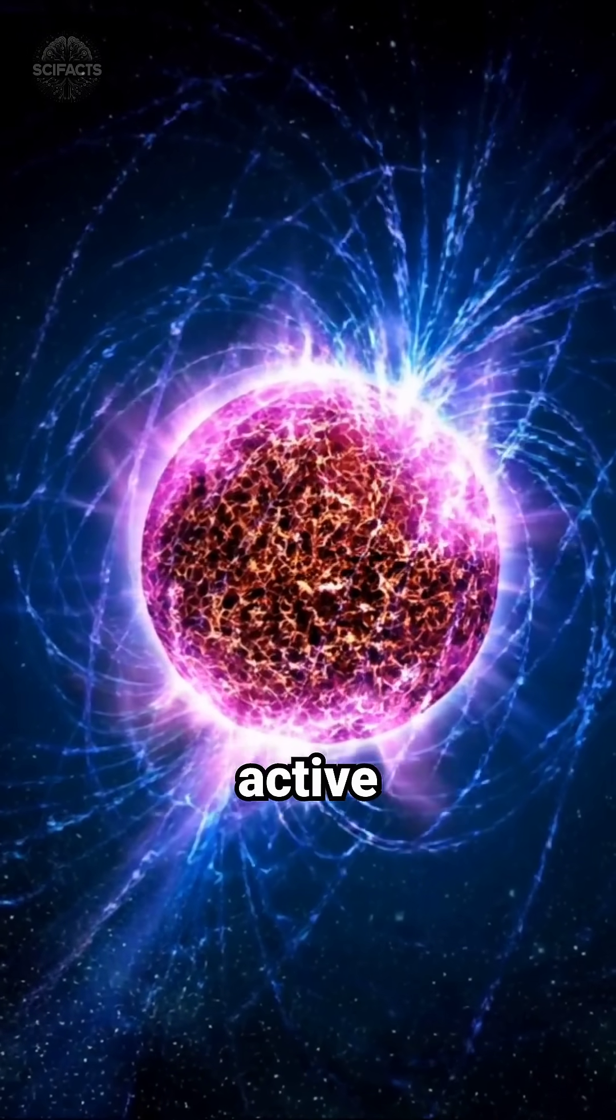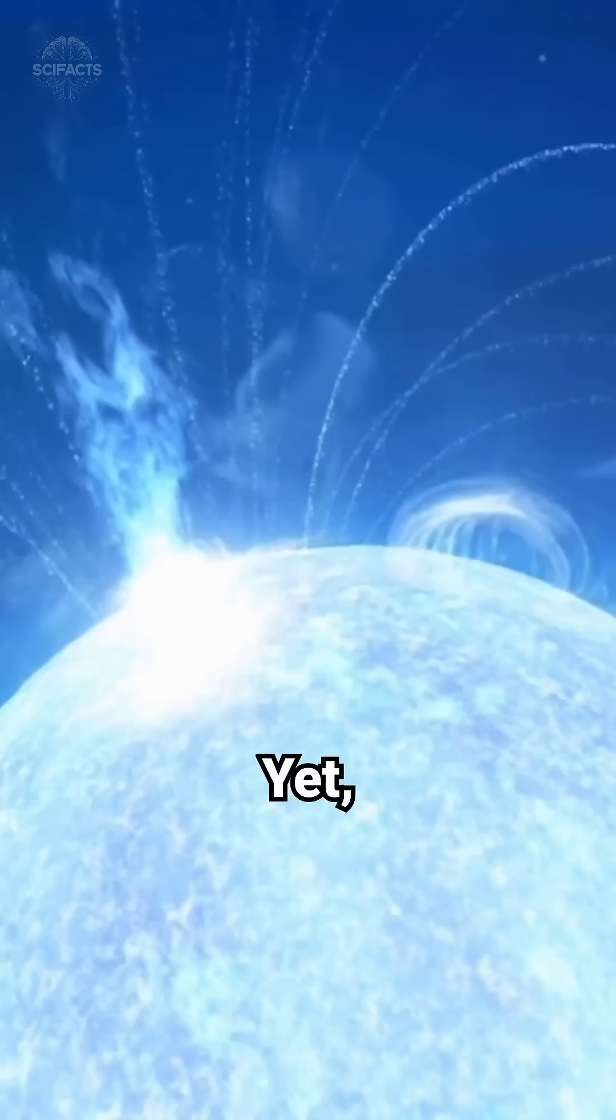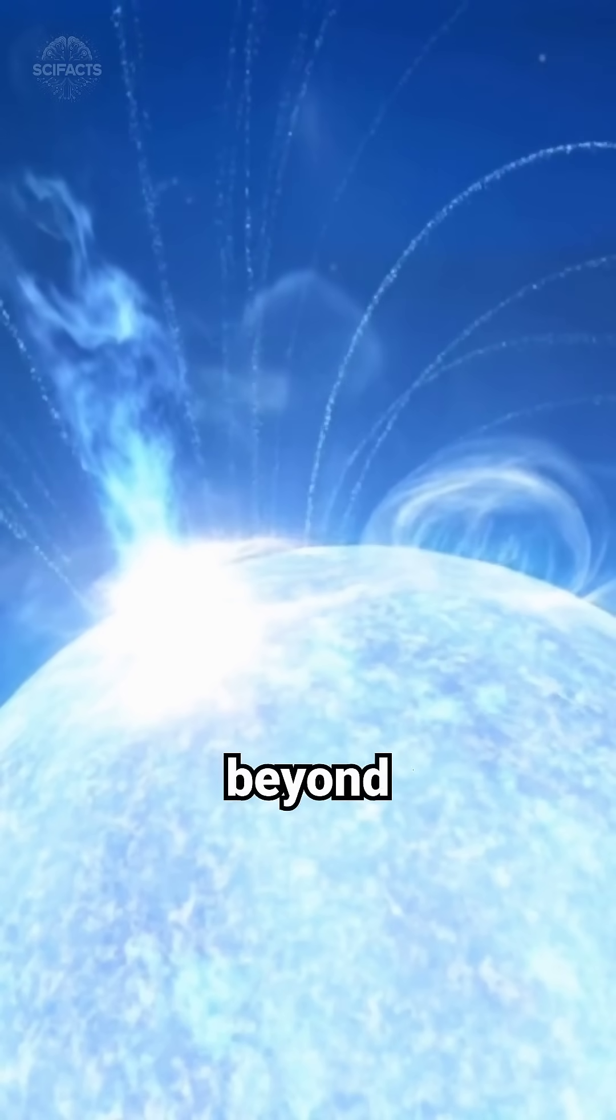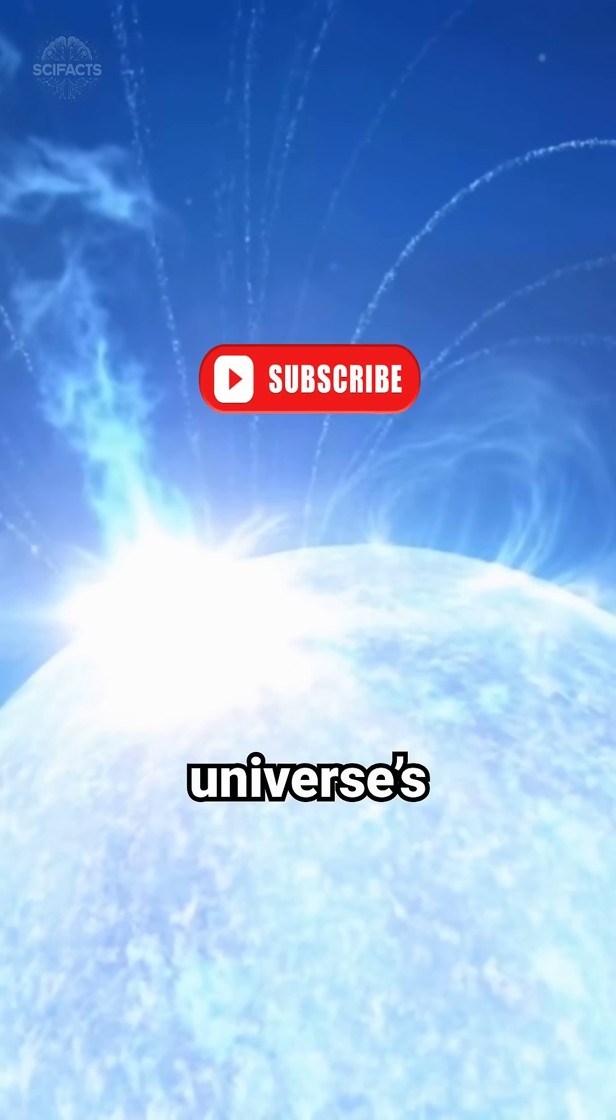magnetars are fleeting, active for only about 10,000 years before their fields weaken. Yet, their influence extends far beyond their lifespan, challenging our understanding of physics and the universe's extremes.